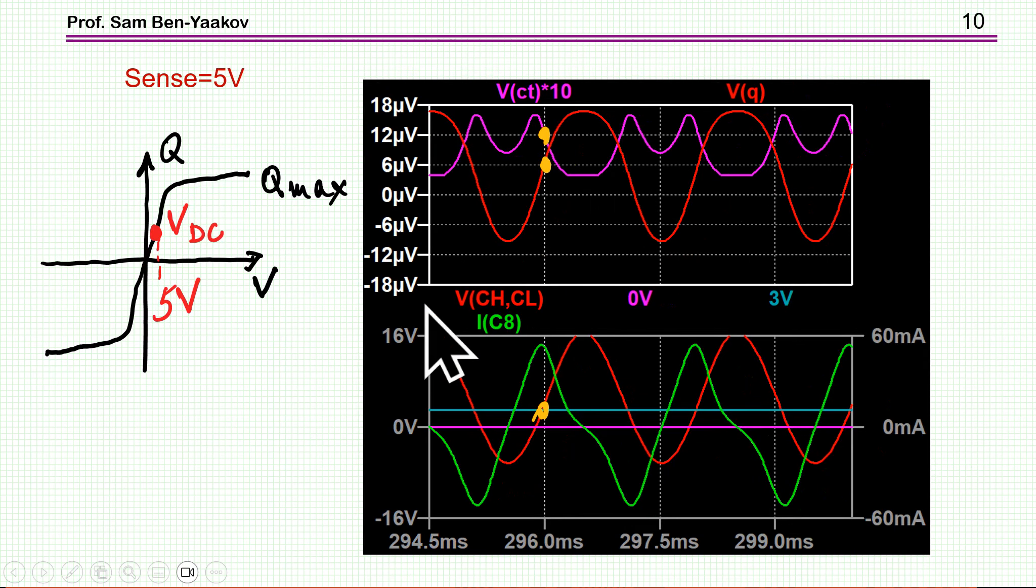Now, I'm going to show the case of a capacitor which is exposed already to a DC voltage. This is the voltage that we want to measure. So, we start at a higher point here, with some DC on it. Well, I'm assuming 5V. So, we are starting with some bias voltage. Therefore, we have some charge, and we are already at a lower capacitance, because the derivative here is lower than around zero, lower capacitance.